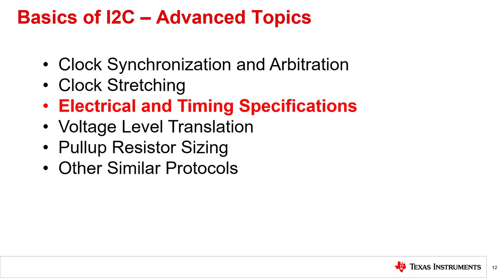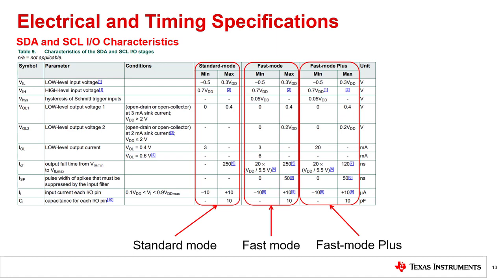Data transmission is delayed by the target device without disrupting communication. The data sheet for every I2C device will have electrical and timing specifications that cover the characteristics for the I2C bus. Because I2C is a common protocol, these specifications should be matched from device to device. This section will discuss the electrical and timing characteristics and how they are shown in the I2C specification. As an example, here we show Table 9 from the I2C specifications. This table shows the input-output characteristics for the I2C bus lines.